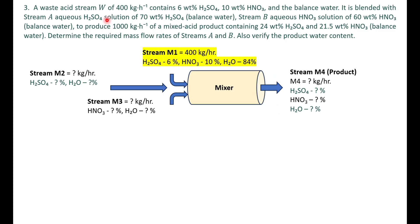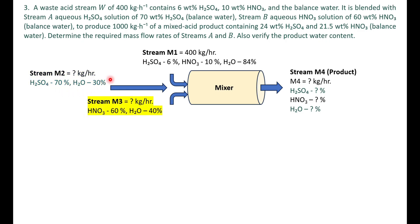For stream m1: 400 kg/hr, with 6 weight percent sulfuric acid and 10 weight percent nitric acid — adding to 16 percent — so the remaining 84 percent is water. For stream m2 (stream A), the flow rate is unknown but composition is given: 70 percent sulfuric acid and 30 percent water. For stream m3 (stream B), the mass is also unknown: 60 percent nitric acid and 40 percent water.